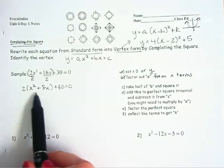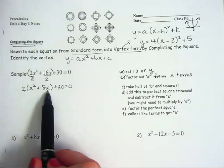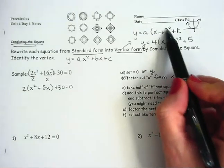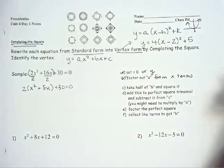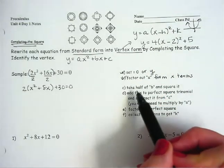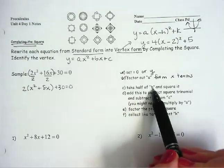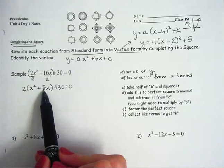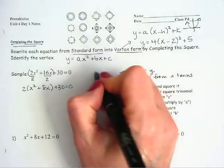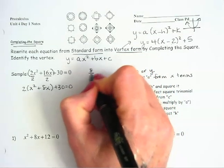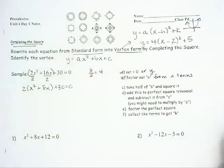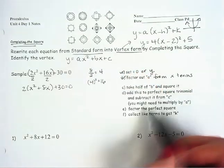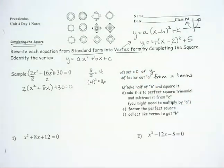So my next step looks like 2(x² + 8x) + 30 = 0. Okay, so now I'm another step closer to my vertex form. So now the question becomes, how do I get from x² + 8x to something that looks like (x - h)². And that's what this next step is going to do for us. It says, take half of B and square it. Well, I should say these next two steps. So my B value is 8. So I'm going to come over here, take half of 8, that gives me 4, and then I'm going to square the 4, and that gives me 16.